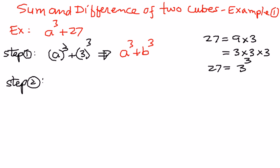So what we have here is the sum of two cubes. The formula is a cubed plus b cubed equals (a plus b) times (a squared minus ab plus b squared).